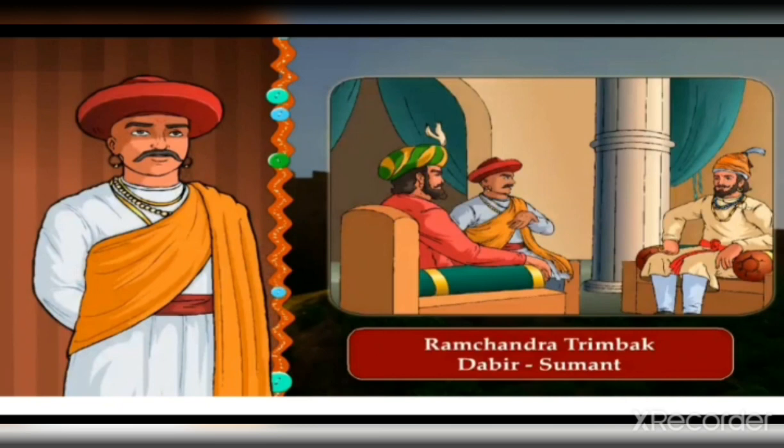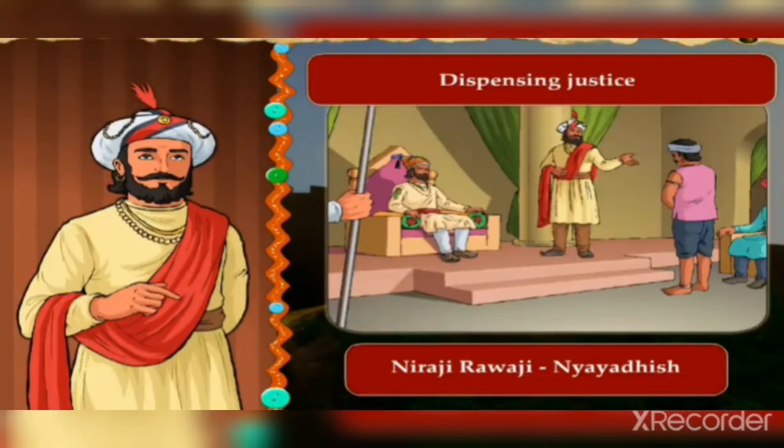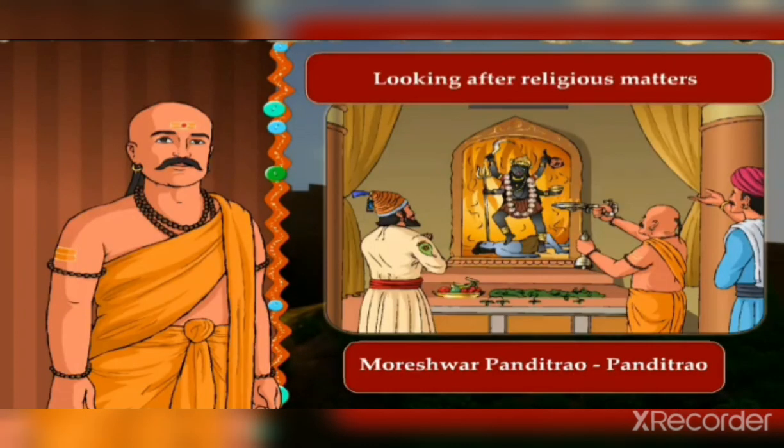Next: Hamir Rao Mohite, designation Senapati — work: organization of the army and protection of the kingdom. Next: Ramchandra Trimbak Dabir, designation Sumant — work: foreign relations. Next: Neeraji Ravaji, designation Nyadish — work: dispensing justice. Next: Maureshwar Pandit Rao, designation Pandit Rao — work: looking after religious matters.